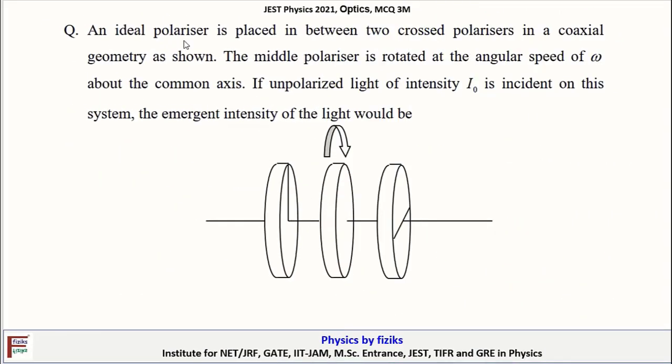An ideal polarizer is placed in between two crossed polarizers in a coaxial geometry as shown. The middle polarizer is rotated at the angular speed of ω about the common axis. If unpolarized light of intensity I0 is incident on this system, the emergent intensity of the light would be.